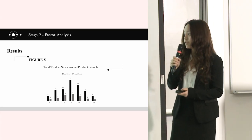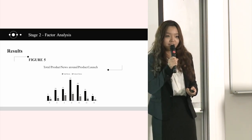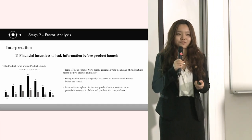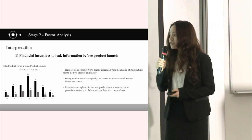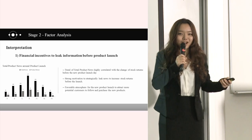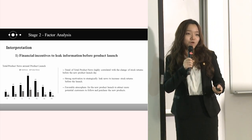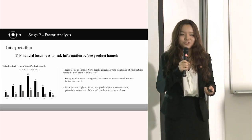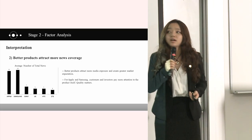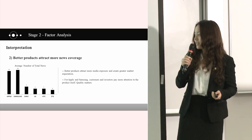We also summarized the total news and product news around the product launch event. Both total news and product news tend to increase before the product launch event, reaching a peak on the product launch day, and after that gradually decreasing. The trend of total news and product news is highly correlated with the trend of stock returns before the new product launch event. This suggests companies have strong motivation to leak information to strategically increase stock returns and create a favorable atmosphere for the new product launch to attract customers. Also, better products have more average news and average product news, meaning better products attract more news coverage and media exposure.